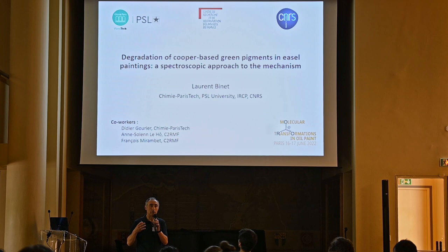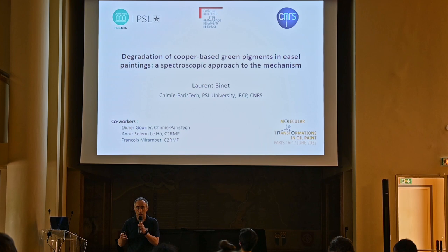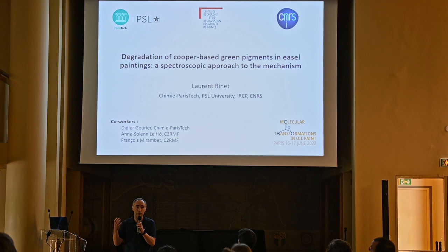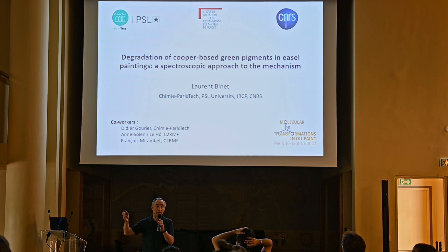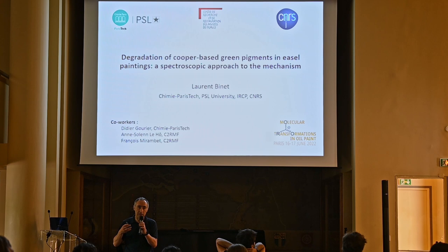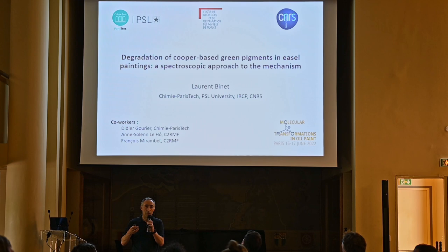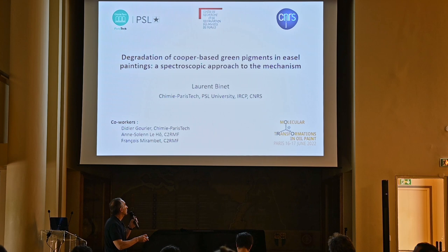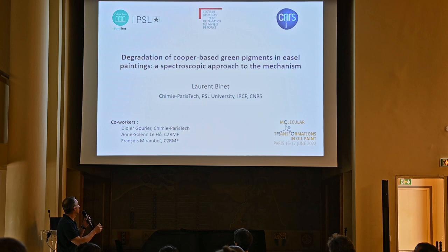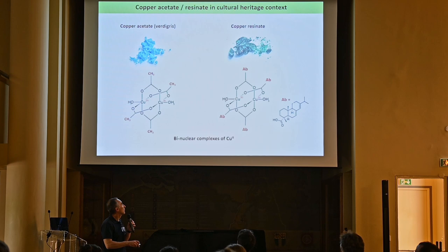The point of my talk this afternoon will be the problem of degradation of green pigments which were mostly used in easel painting during the Renaissance. These pigments are carboxylate copper complexes which suffer from some kind of chemical instability, and these degradations transform their color from green to brown over centuries and even decades. The purpose of our work was to get some insight into the mechanisms of this degradation by focusing specifically with dedicated spectroscopic techniques on these carboxylate copper complexes to monitor changes in their chemical structure. I would also like to mention my co-workers: Didier Gourier, Anne Solène Le Haut, and François Mirambet.